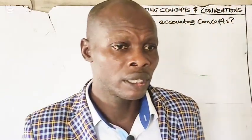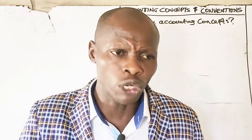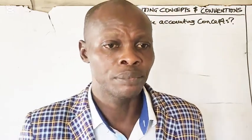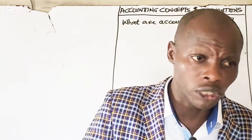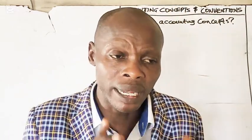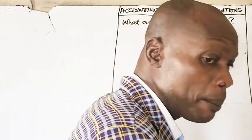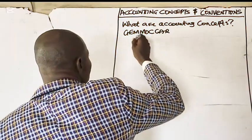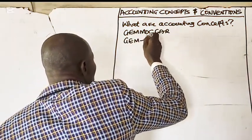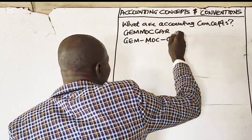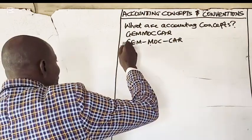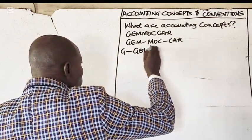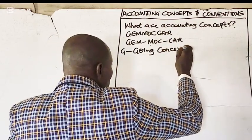Accounting concepts are the basic assumptions on which financial statements are prepared. Remember this mnemonic: GEMMOKAR. G stands for going concern concept.